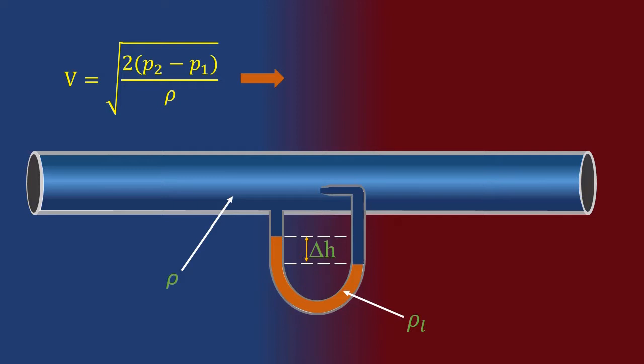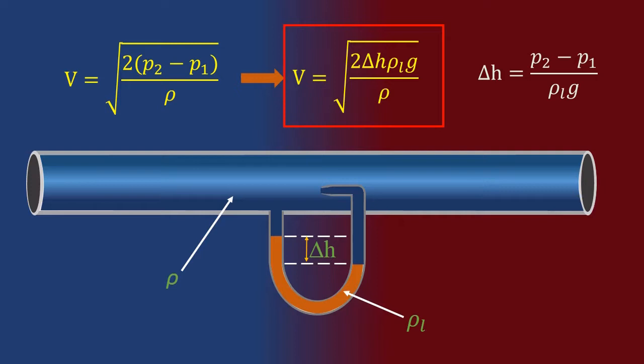So from this we can again derive the velocity of the fluid as under root 2 times delta h times rho l times g. Delta h is equal to p2 minus p1 by rho l times g, where rho l is the density of the manometric fluid.